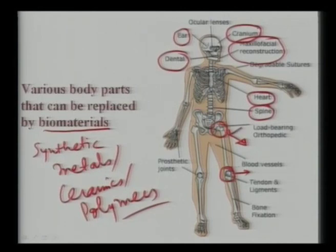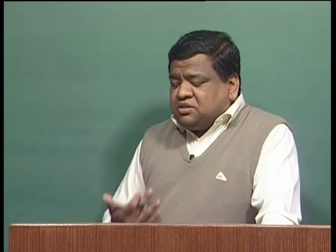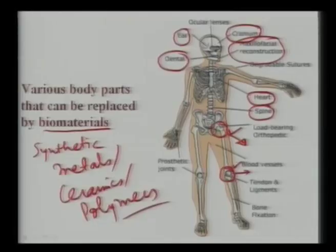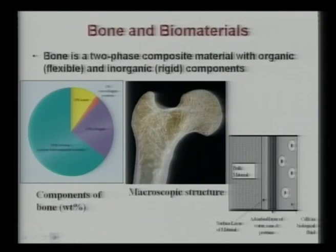For knee joints, cobalt-chrome-moly alloys or ultra-high-molecular-weight polyethylene are typically used. I must mention that for both knee and hip joints, mechanical properties are also important — but again I emphasize: biological properties first, then mechanical properties as the second most important consideration.